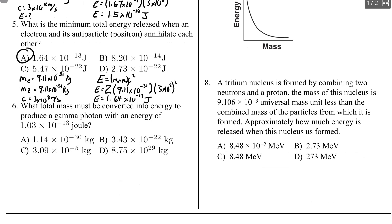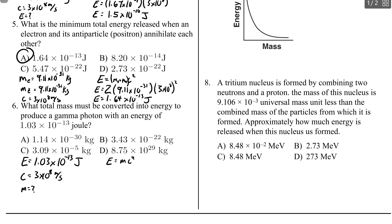Number six: what total mass must be converted into energy to produce a gamma photon with an energy of 1.03 times 10 to the negative 13 joules? Now they're giving the energy and asking for the mass. Using E equals MC squared, solve for mass: M equals E over C squared. Substituting in the values, you get a mass of 1.14 repeating times 10 to the negative 30 kilograms — choice A.